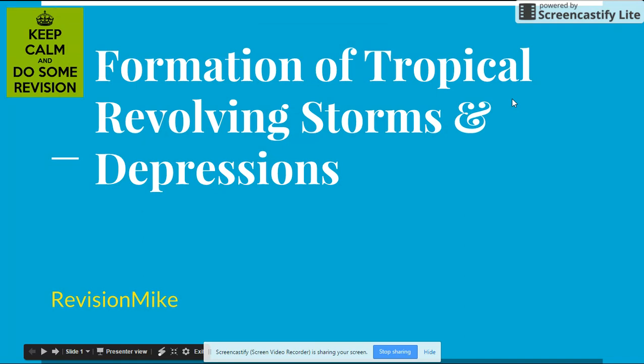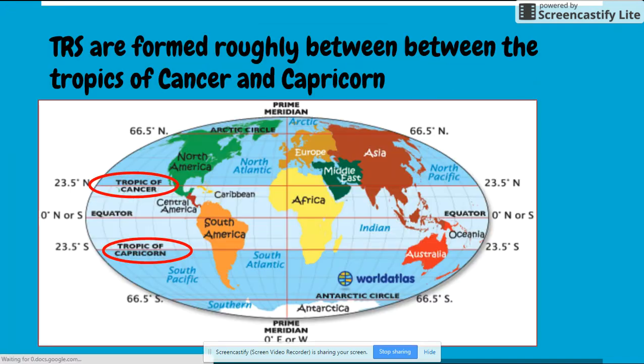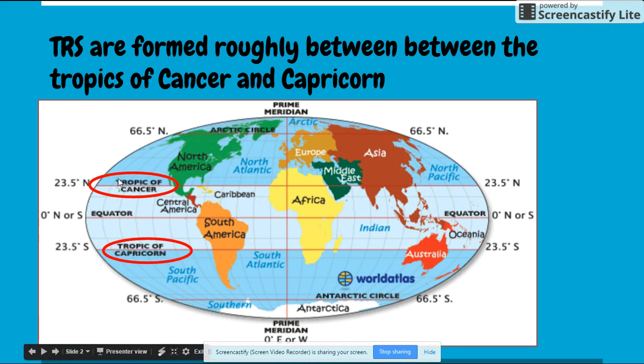The formation of tropical revolving storms and depressions. Tropical revolving storms are formed roughly between the Tropics of Cancer and Capricorn. Conditions for the formation: